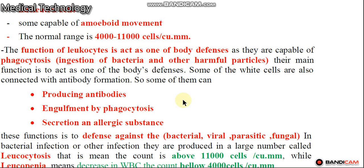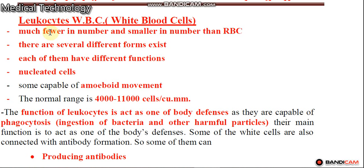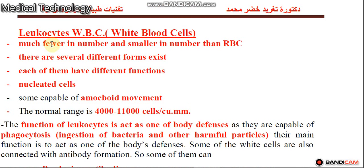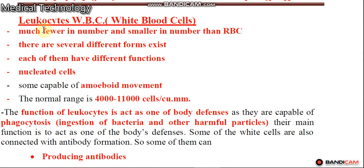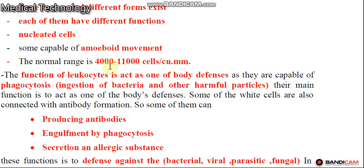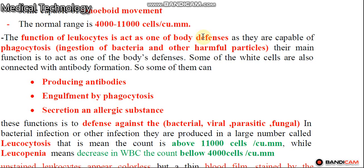Hello everybody, this is lecture number one, part three, about blood and its components. In part two, we explained the differences between anemia and polycythemia, and the main characteristics of leukocytes. The main function of RBCs is carrying oxygen and CO2.